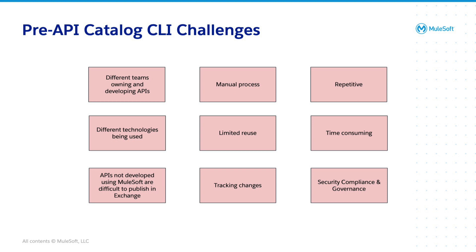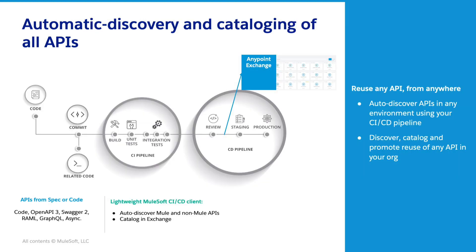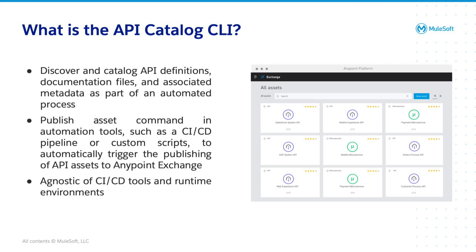As part of the Universal API Management Initiative, AnyPoint API Catalog CLI also addresses the challenges around publishing non-Mule APIs in Exchange to further streamline the cataloging process. This makes it even easier to discover and reuse APIs managed by third-party gateways in AnyPoint Platform. You can auto-discover APIs whenever they're deployed and bring them into Exchange using your DevOps CICD pipeline. This will help promote reuse of any API in the organization, no matter what technology or gateway, and you can discover and automatically catalog APIs in any environment in order to create a single source of truth in your organization.